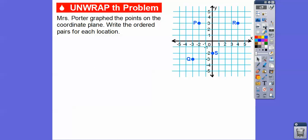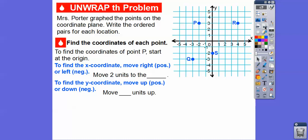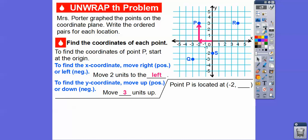Mrs. Porter graphed the points on the coordinate plane, and we want to write the ordered pairs for each location. To find the coordinates of point P, we always start at the origin. Since we moved to the left from the origin two units, the x-coordinate is negative two. Then from there we go up one, two, three — three units up. So point P is located at negative two, three.